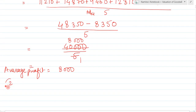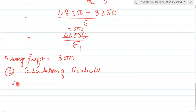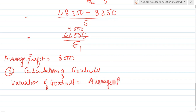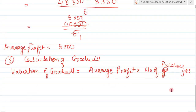Now the next calculation is the calculation of goodwill, because we have to calculate the value of goodwill. The formula is: valuation of goodwill equals average profit multiplied by number of purchase years. So average profit we got is 8,050, multiplied by the number of purchase years.